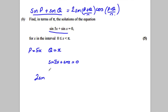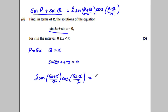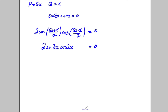Using the identity, that's 2 sine((5X+X)/2) cosine((5X−X)/2) equals zero, which gives 2 sine(3X) cosine(2X) equals zero. The beauty of this is we now have two sets of solutions: when sine(3X) is zero and when cosine(2X) is zero.